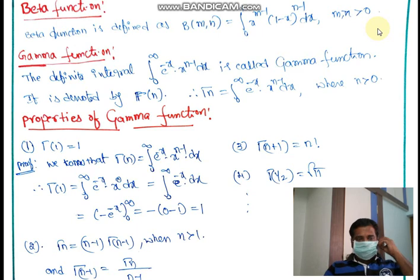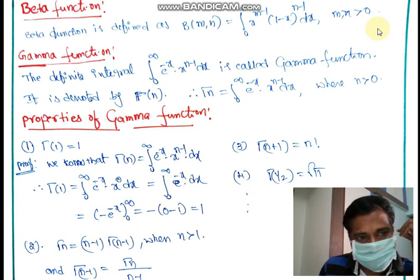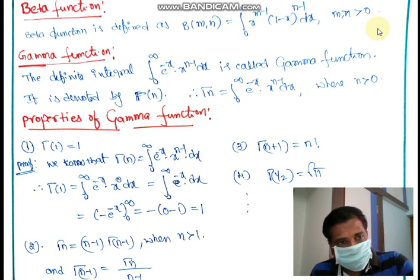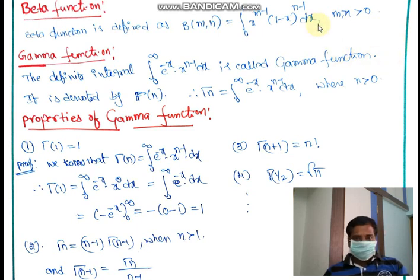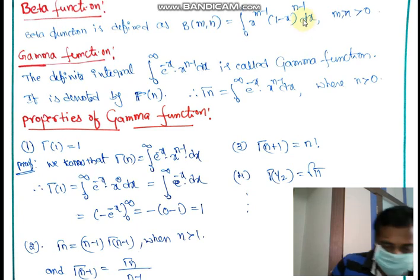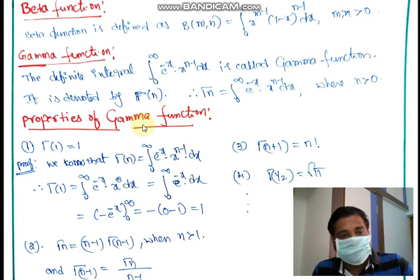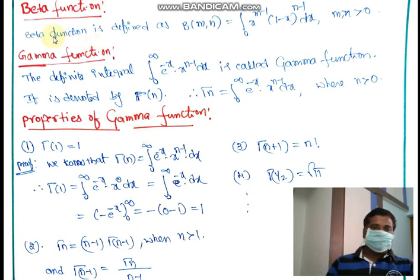Students, in the last video — Unit 4 Mathematics 2, Lecture 1 — we discussed the basic definitions of beta and gamma functions, properties of the beta function, proofs, and some basic problems. In this second lecture of Unit 4, Special Functions: Beta and Gamma, we will see properties of the gamma function, proofs, and the relation between beta and gamma functions.